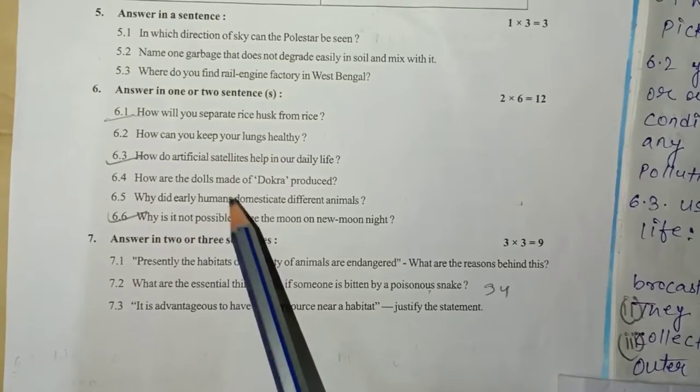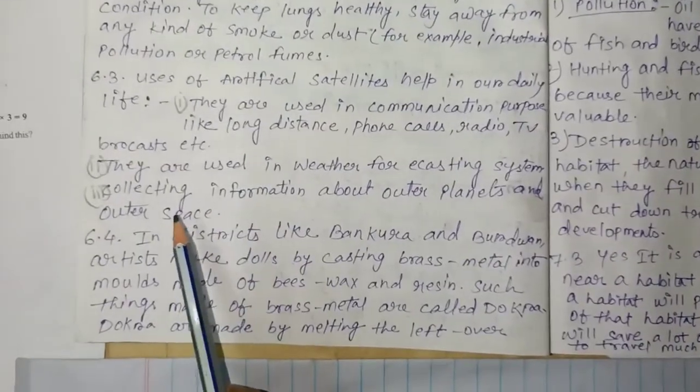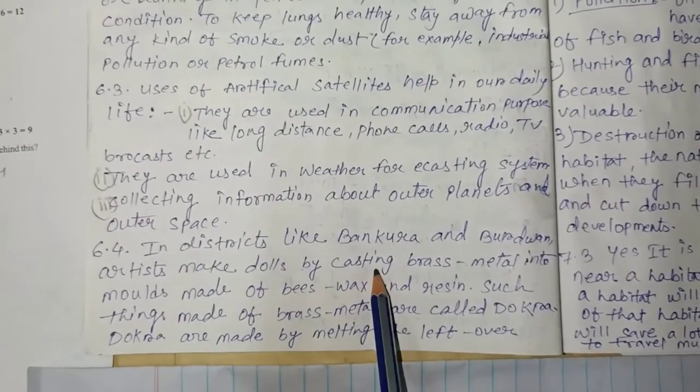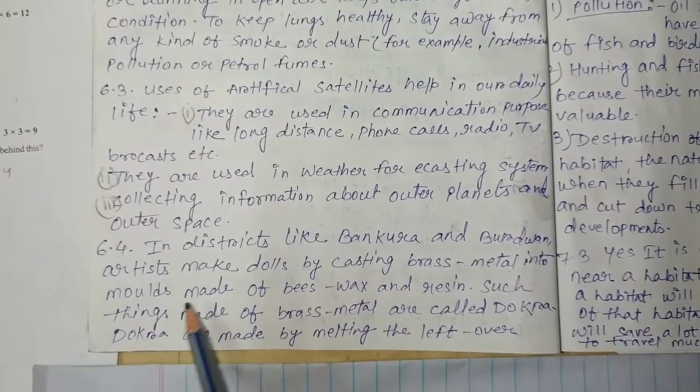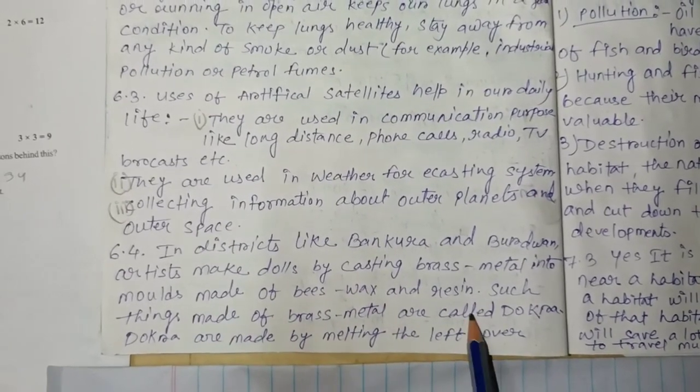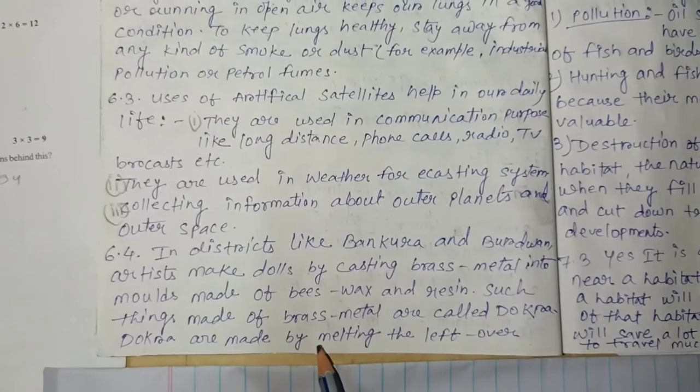6.4: How are the dolls made of Dokra produced? In districts like Purulia and Bardhaman, artists make dolls by casting brass metal into molds made of beeswax and resin. Such things made of brass metal are called Dokra. Dokra are made by melting the leftover pieces of brass or some other metal.